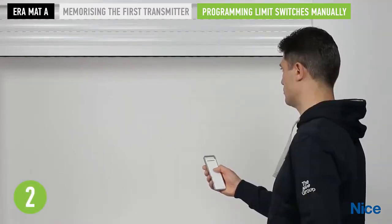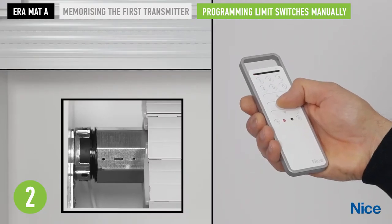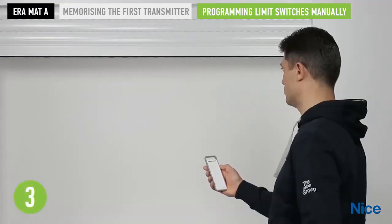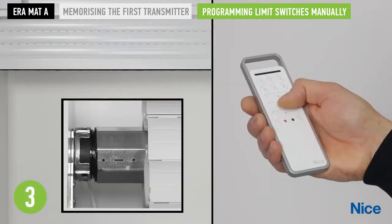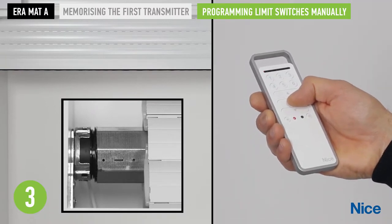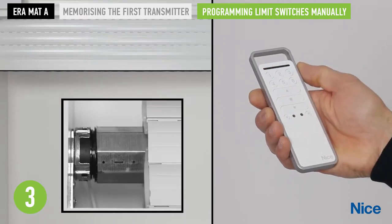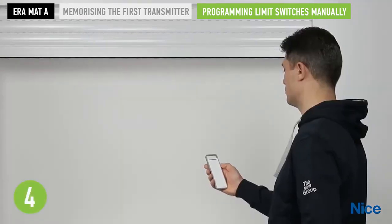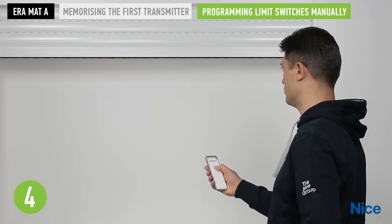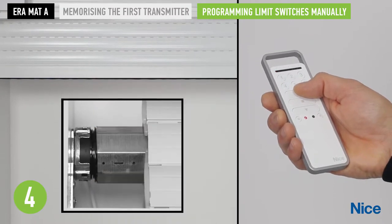Step 2: Press and hold the stop key and wait for the rolling shutter to perform two movements, then release. Step 3: Press and hold the stop key and wait for the rolling shutter to perform four movements, then release. Step 4: Press and hold the up arrow key and wait for the rolling shutter to perform two movements, then release.